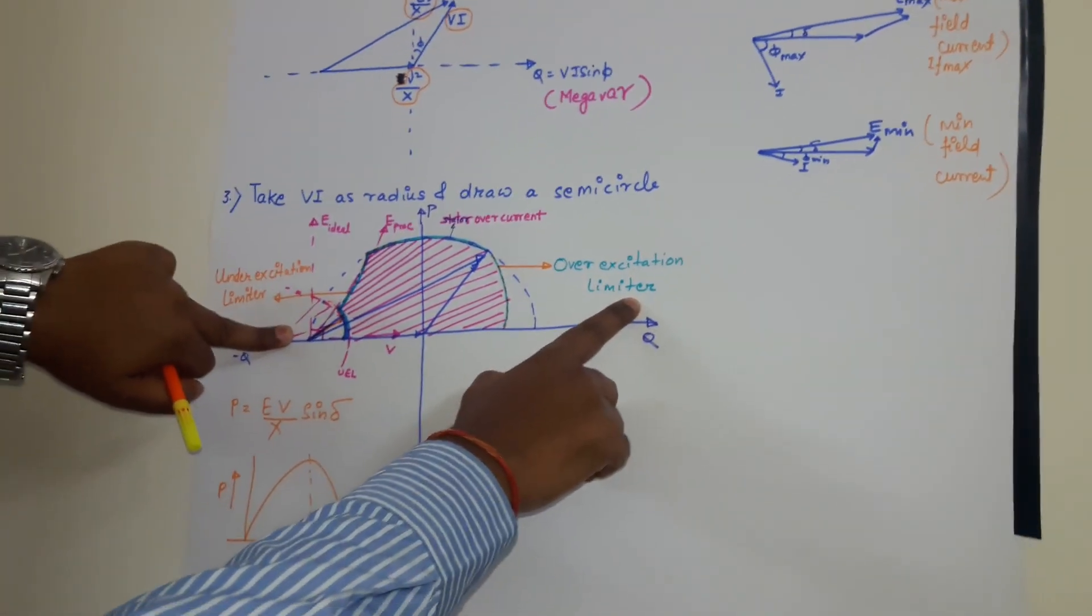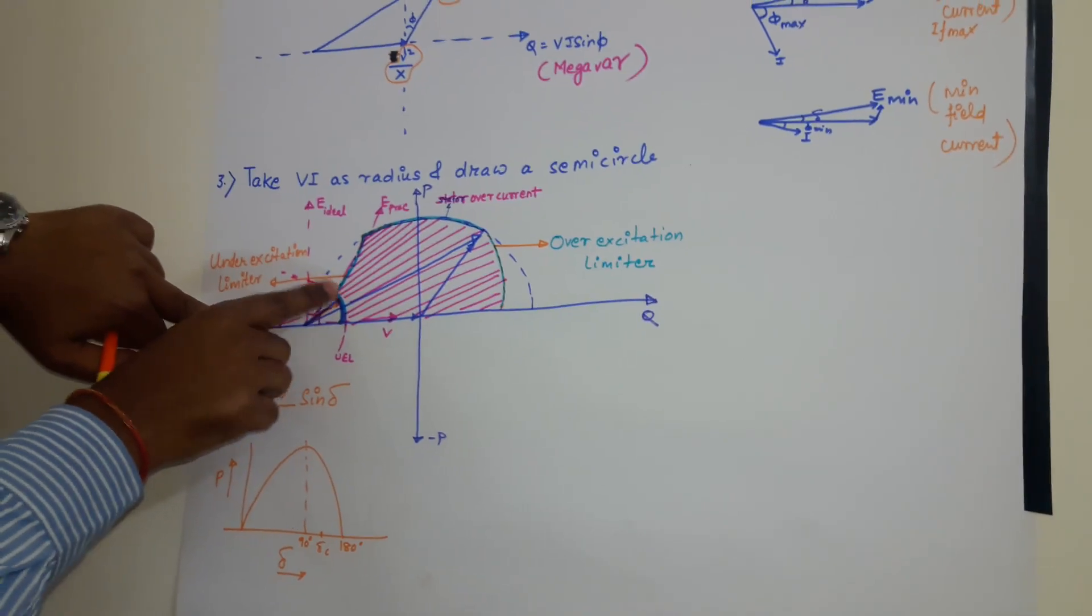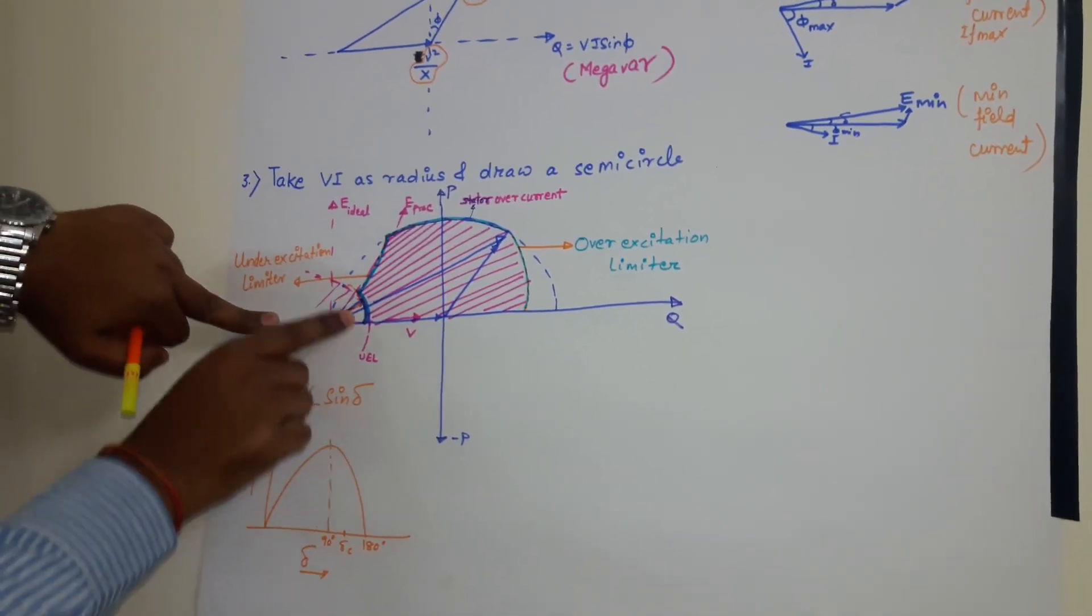So generator can operate up to this point. This is my over excitation limiter. Now by taking a smaller radius, this is my under excitation limiter.